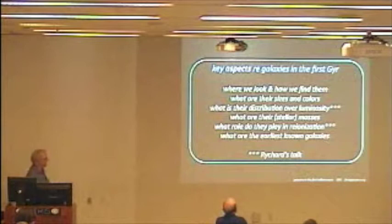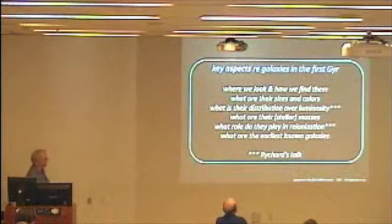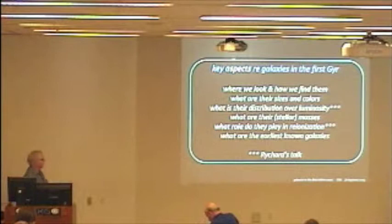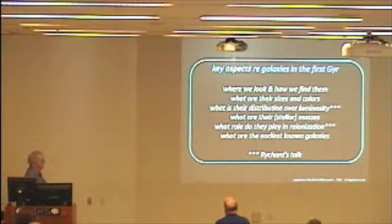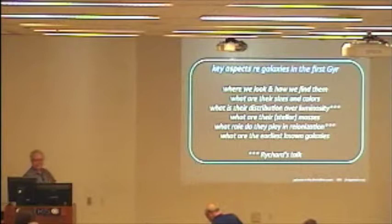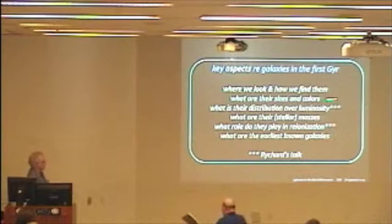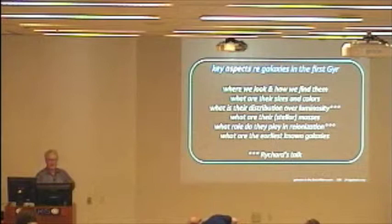So key aspects of the galaxies in the first year: where we look, how we find them, sizes, colors, luminosity distributions, luminosity functions, masses, their role in reionization, earliest known galaxies. There's a lot of topics here, far more than I can cover in a 20-minute talk. And Richard is going to focus on reionization and distribution over luminosity as well. And I'll cover various aspects of these. I'll sort of give you a broad picture of the state of galaxies.